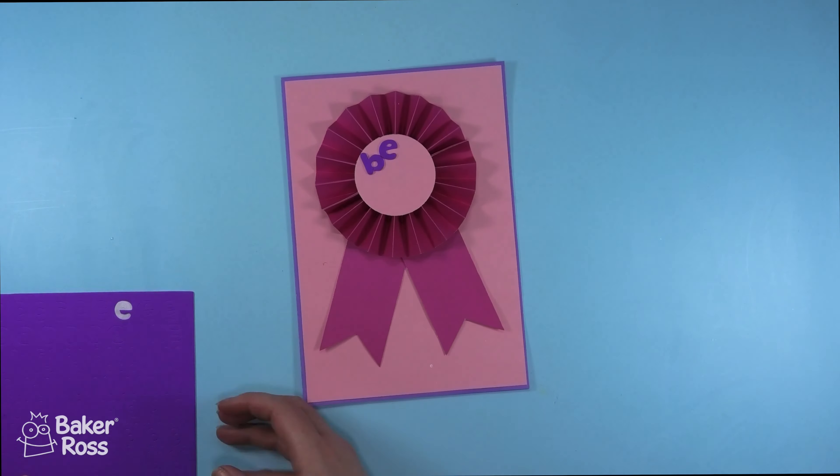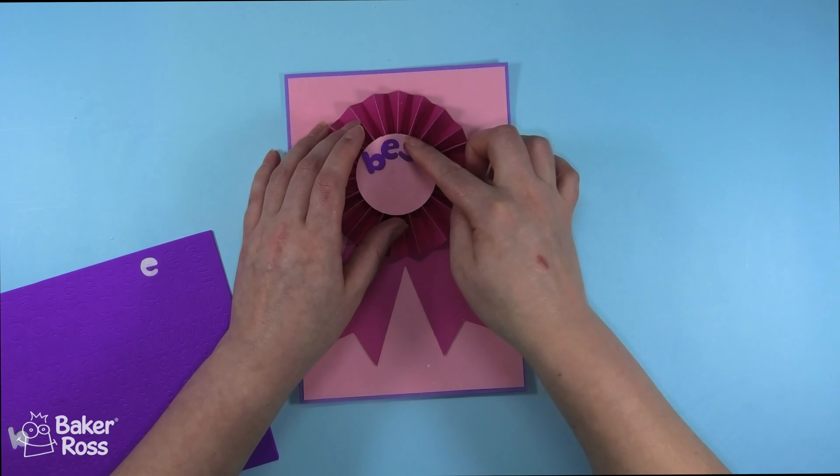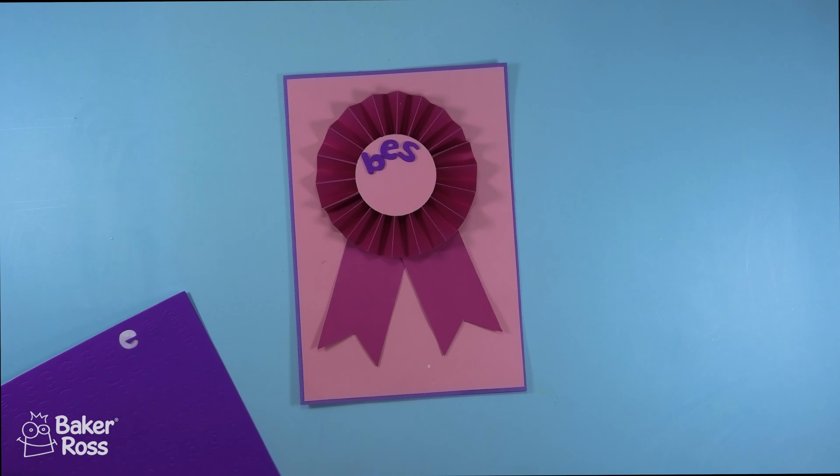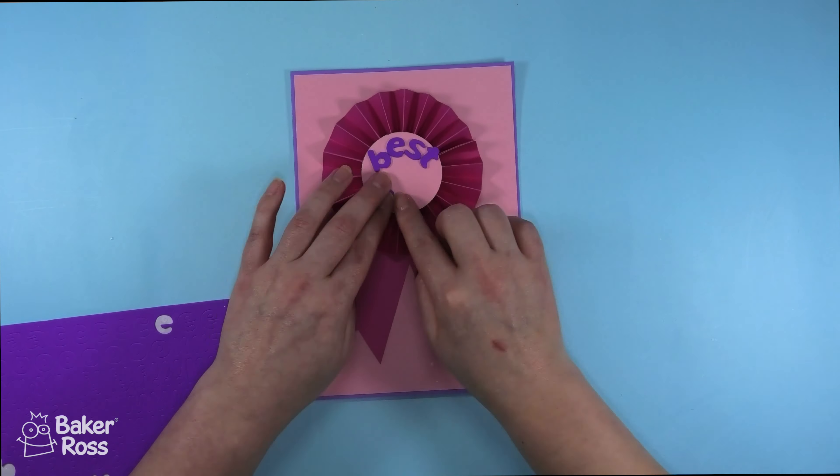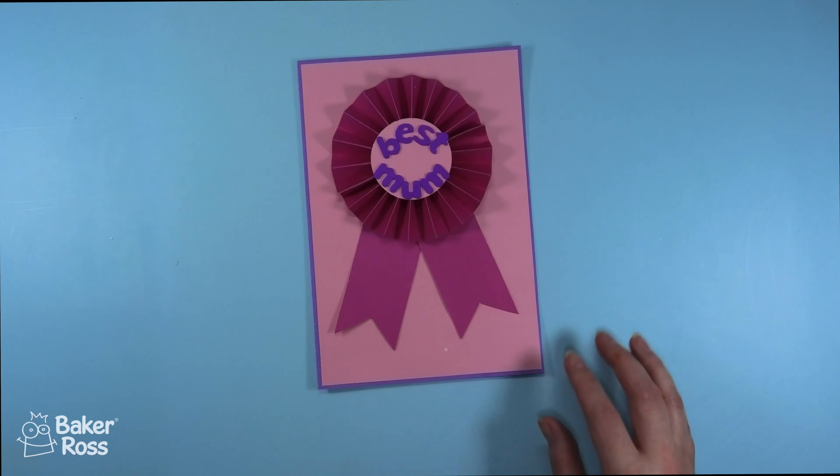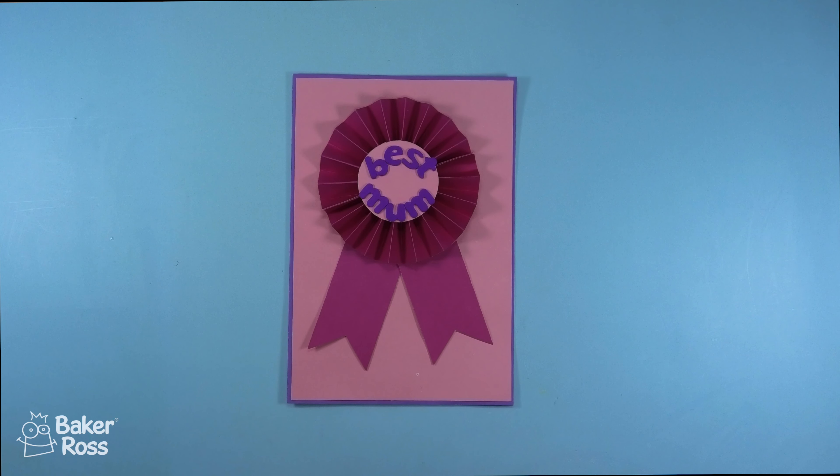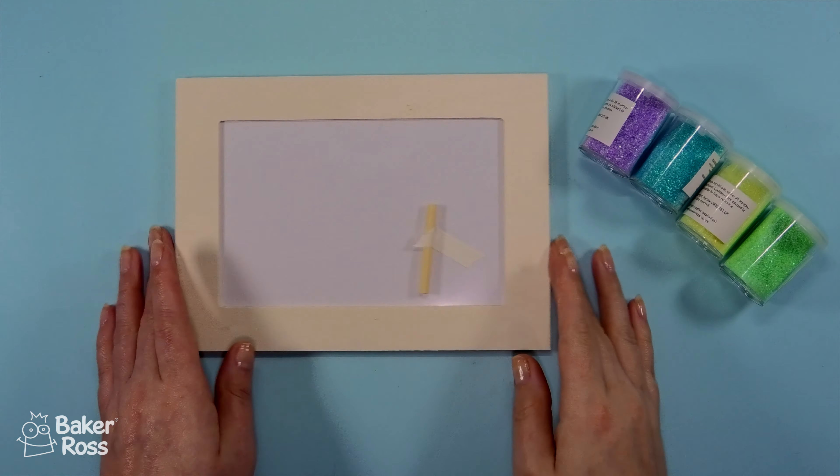Now it's just time to add a sentiment and I'm using these lowercase foam stickers from Baker Ross to spell out best mom on the rosette ribbon. If you don't have these you could definitely use some paint pens or some markers to add in that sentiment and that is the first card finished.